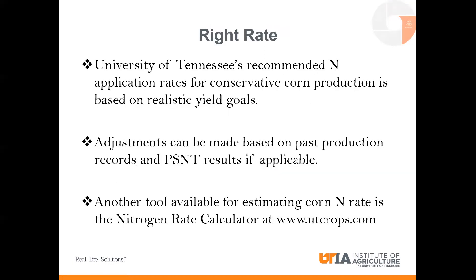The next principle is right rate. The University of Tennessee's recommendation for nitrogen application rate for corn is a very conservative approach based on realistic yield goals. A grower can make adjustments based on past production records or history, as well as PSNT soil test results if necessary, particularly if manure has been applied. There's also a tool available to estimate corn nitrogen rate — the nitrogen rate calculator — and we are currently working to make that model more robust at predicting nitrogen rate recommendations.